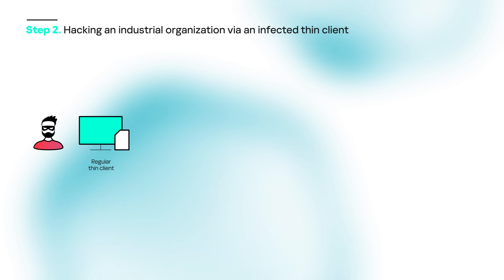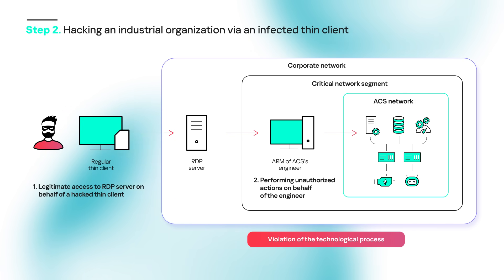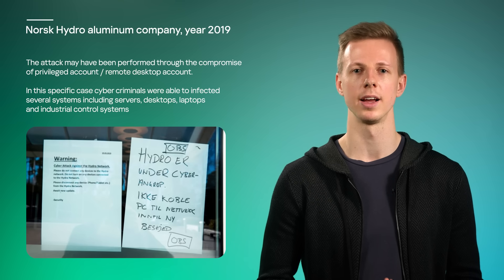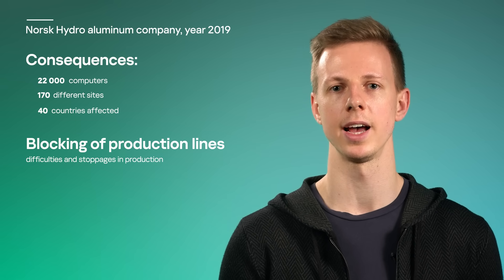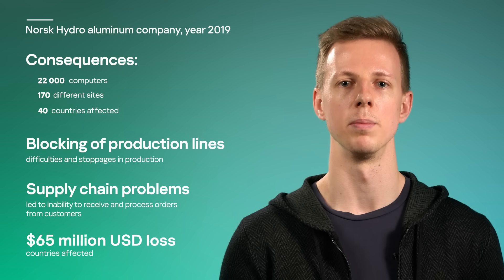The engineer then uses the same infected Thin Client to connect to the server of another customer, a large industrial company. As a result, the attacker can perform any action in the engineer's name, up to and including violating the technological process. This example is not hypothetical. In 2019, Norsk Hydro, a large Norwegian aluminum company, was hacked, and the entry point was probably an RDP server in the virtual desktop infrastructure. As a result, 22,000 computers in 40 countries were infected, production was halted at several sites, and the total loss is estimated at 65 million dollars.